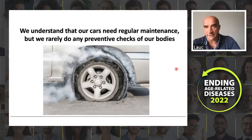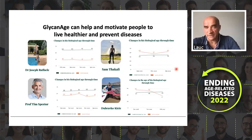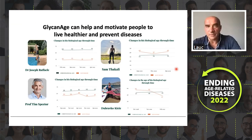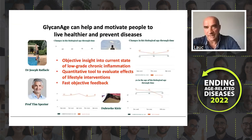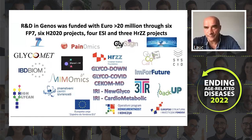Prevention is way better than waiting for the tire to explode. Glycan age can really help here because it can motivate people to live healthier — we know what is healthy, but we generally don't do it, because the payback comes in several decades and we are not that patient. With optimal quantification and early feedback, people can get much better motivated. At the very end, I have to acknowledge that we received over 20 million euros in research grants which enabled us to do all this research. Thank you for your attention — happy to answer questions if there's still time.